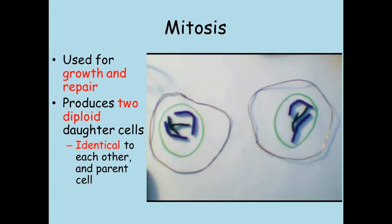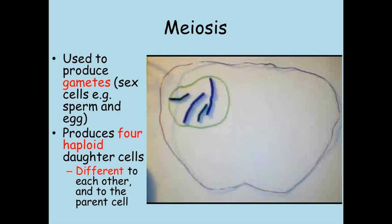Mitosis works to make every new cell in a plant or animal except for the cells used to produce sexually. These sex cells, known as gametes, are different as they only contain one set of the chromosomes. They're called haploid. This is so that when two gametes combine in fertilisation, they produce a diploid cell that can then divide by mitosis as normal.